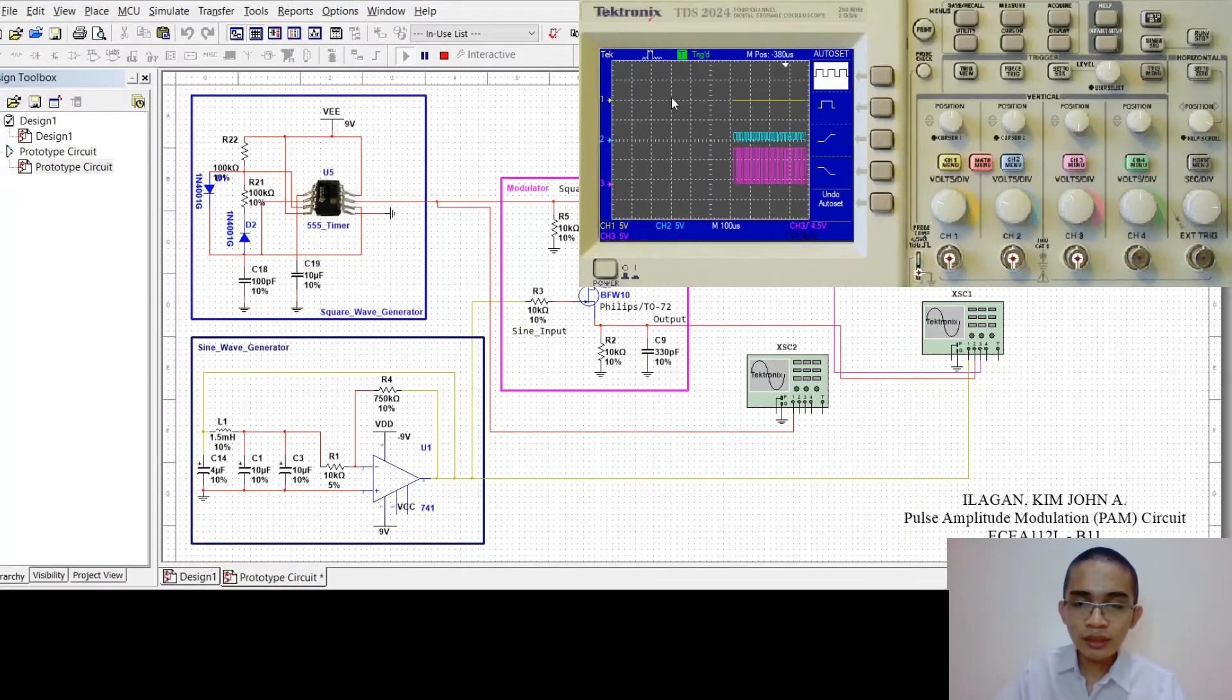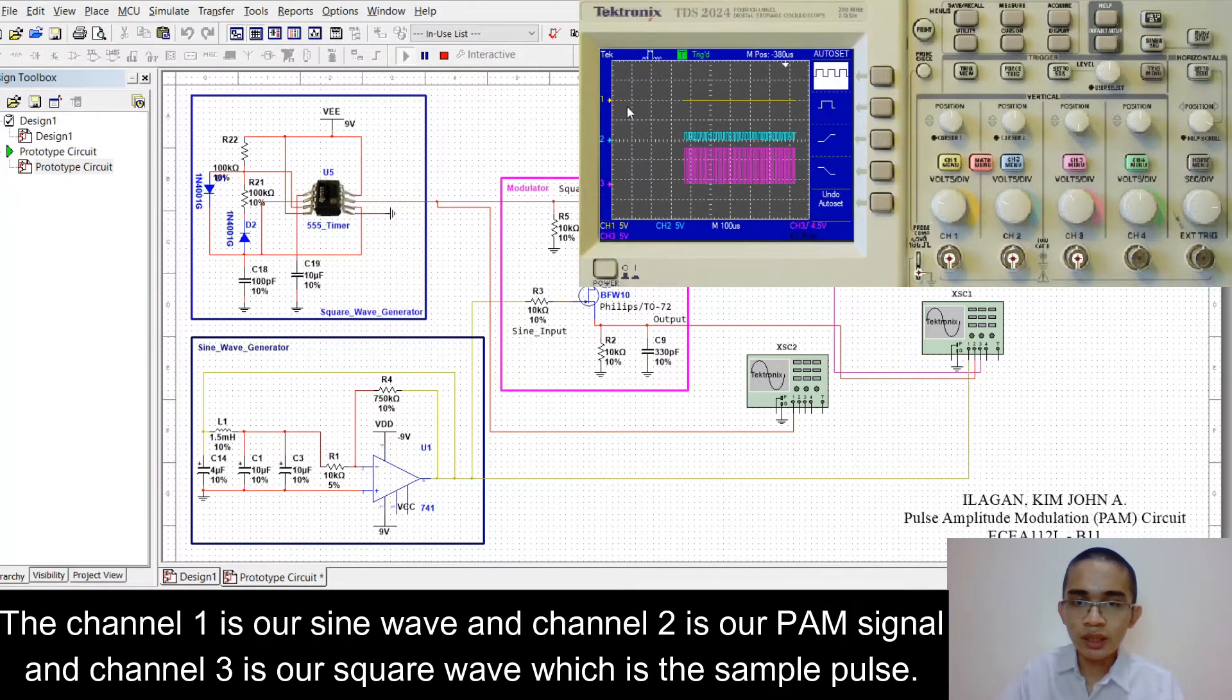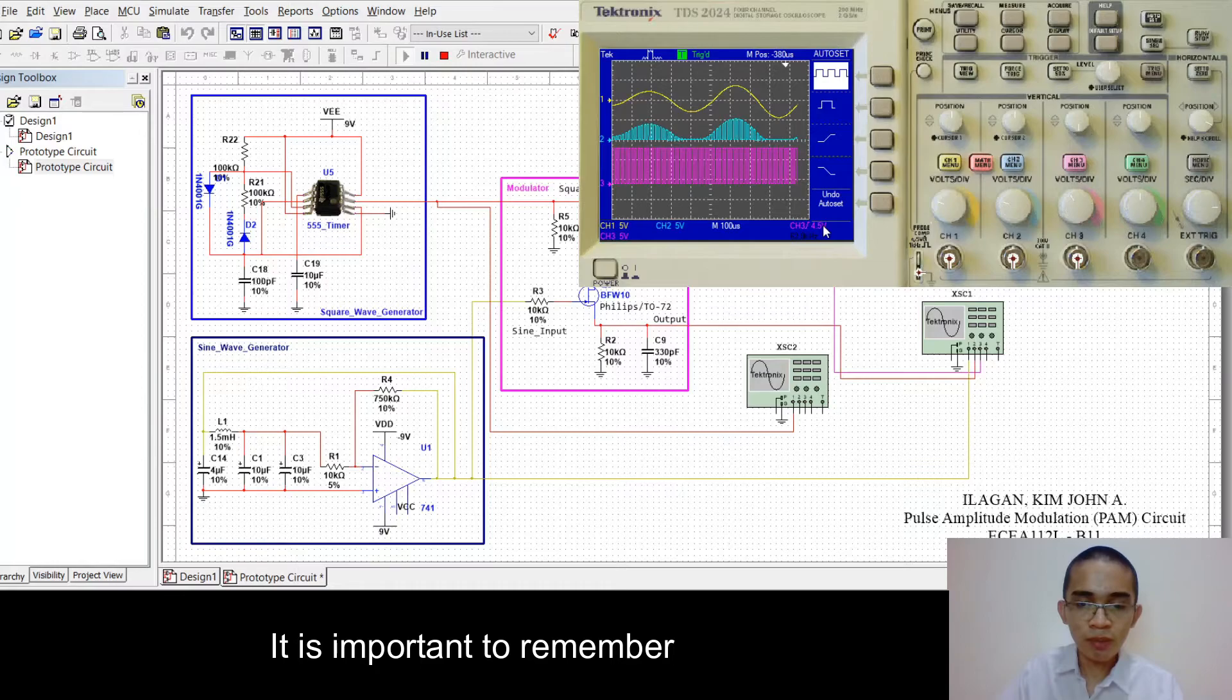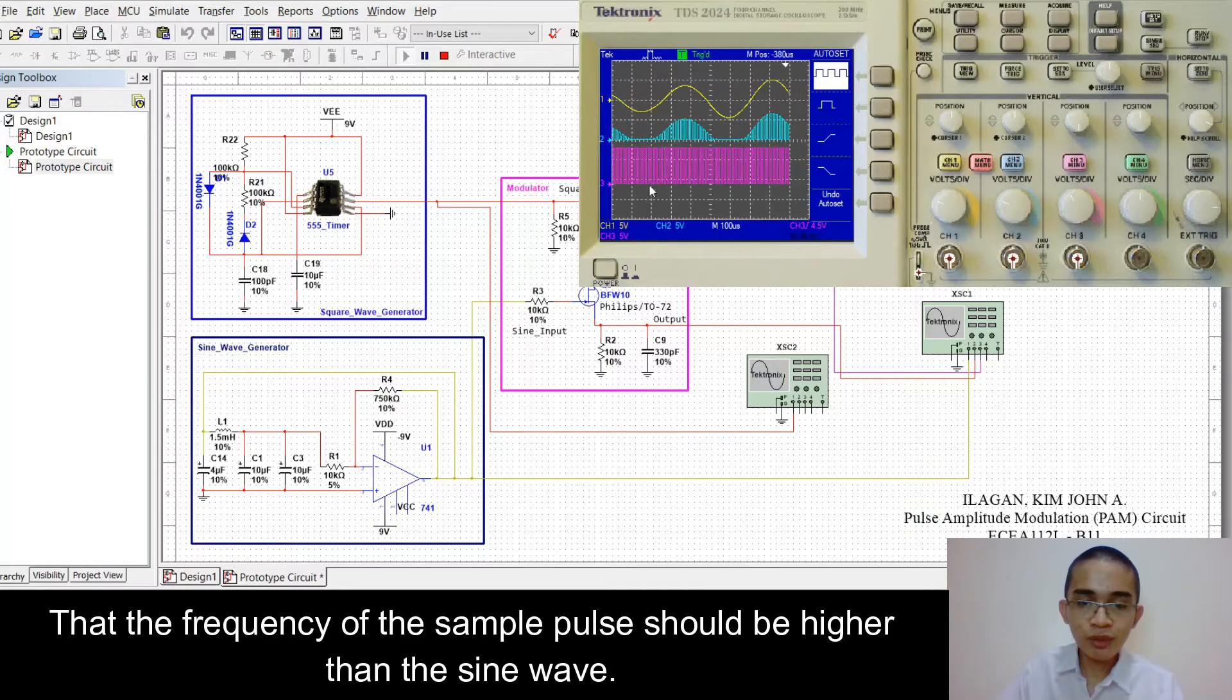As you can see, the channel 1 is our sine wave, channel 2 is our PAM signal, and channel 3 is our square wave, which is the sample pulse. It is important to remember that the frequency of the sample pulse should be higher than the sine wave.